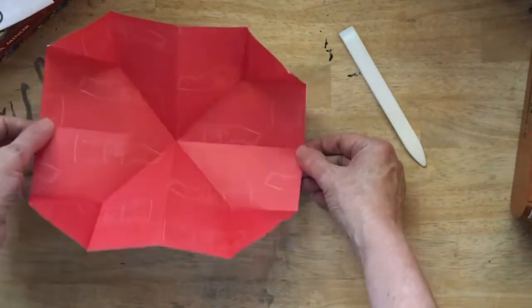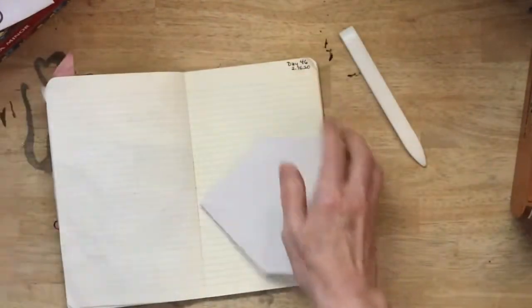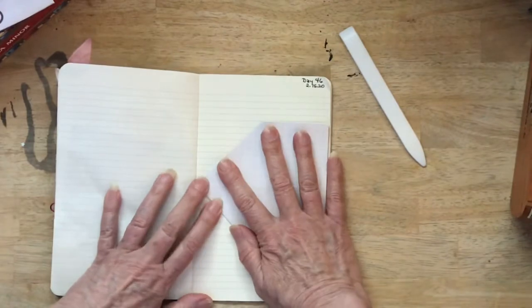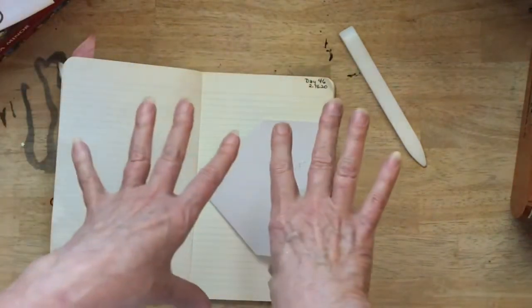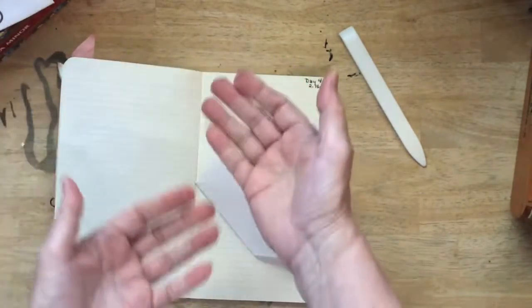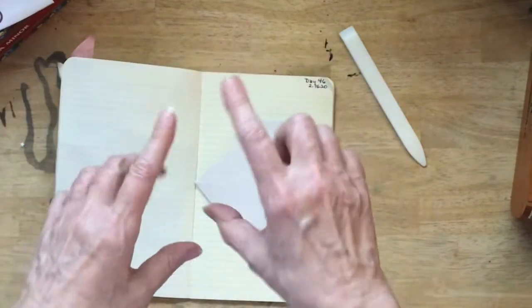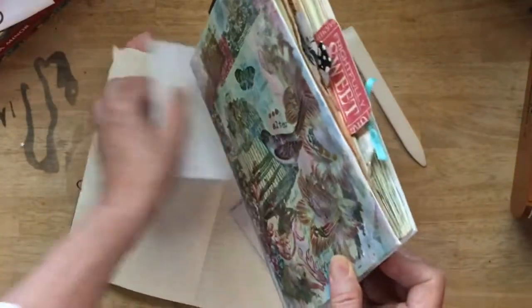Let me come in here and put that in my book and show you how to glue it. If you're putting it in a junk journal or an altered book, the best thing to do is remove about six or eight pages depending on how thick the pages were.